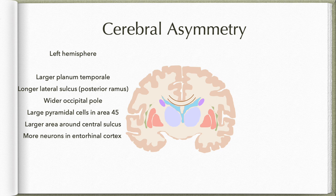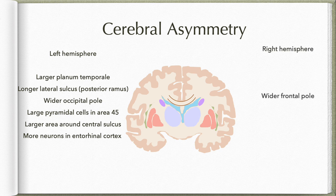The left hemisphere has a wider occipital pole and larger pyramidal cells in area 45. It also has a larger area around the central sulcus, because most people are right-handed, so both the pre-central and post-central gyri in that region will be larger. For some unknown reason, the left hemisphere also has more neurons in the entorhinal cortex, which is actually an olfactory area. On the contrary, the right hemisphere has a wider frontal pole.